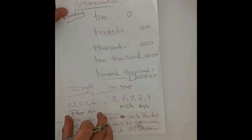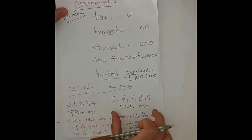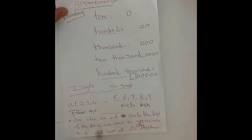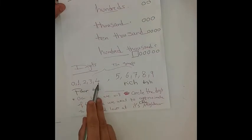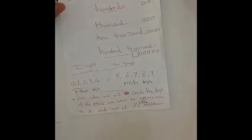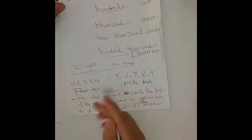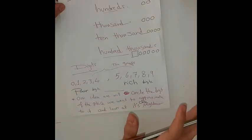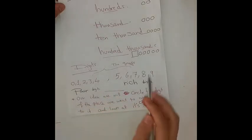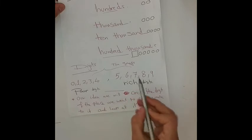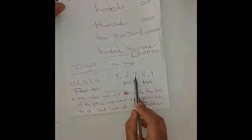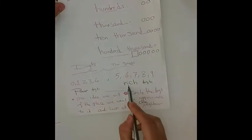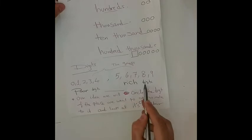Some digits are poor and some are rich. Our poor digits are zero, one, two, three, and four. We cancel them and don't add anything. Our rich digits are five, six, seven, eight, and nine. We cancel them and add one to the next digit.